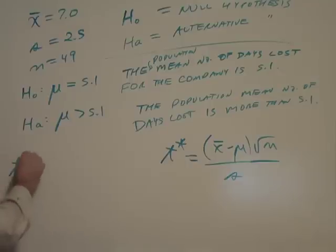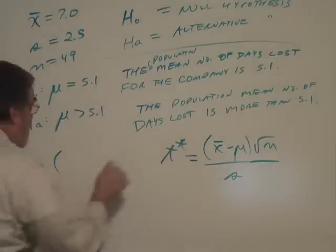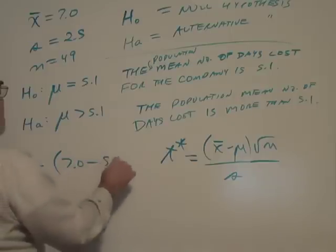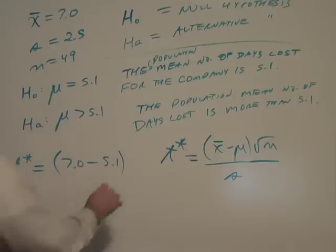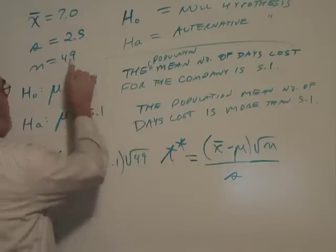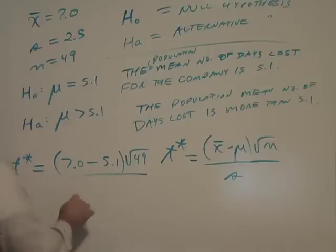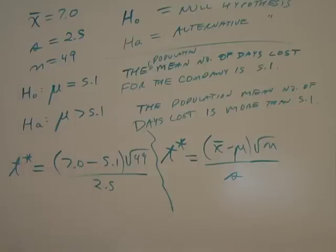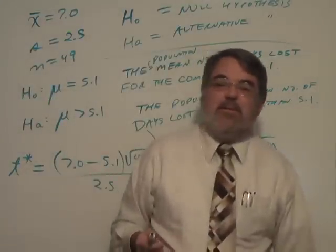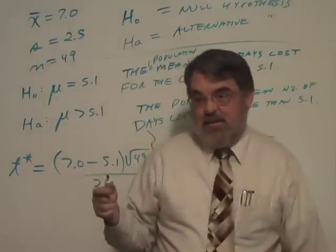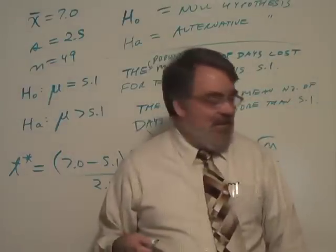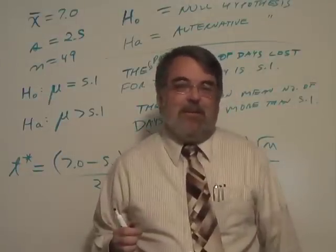So I have t-star is, parentheses, x-bar is 7.0. And we're comparing it to the hypothesis mean of 5.1. So we're going to subtract it. Square root of 49, which 49 was the sample size. And divide by s, that was 2.5. So let me kind of separate these. Here's my calculation. Sometimes we call it a t-test or a test for significance. So I need to find my calculator. I'm going to interrupt the video here for a minute and get my calculator.